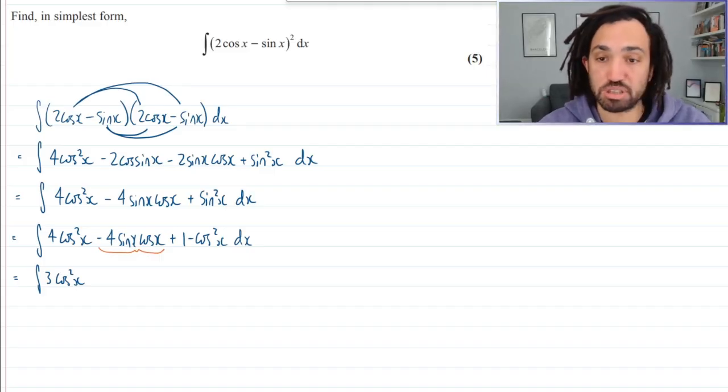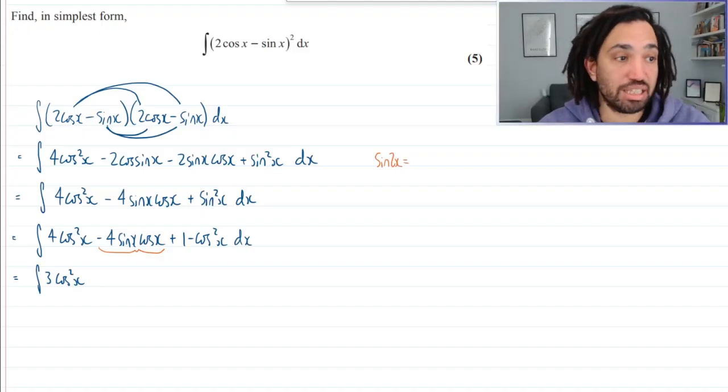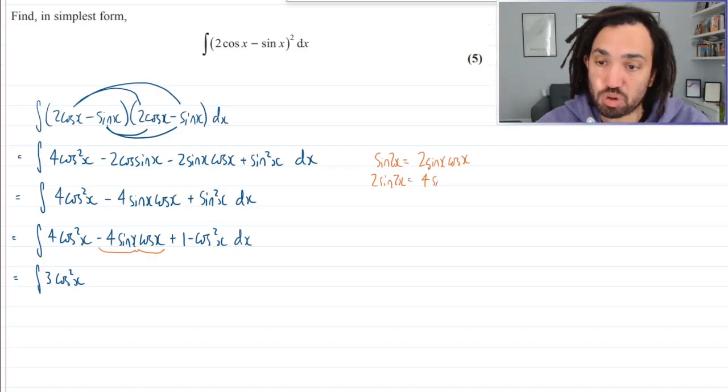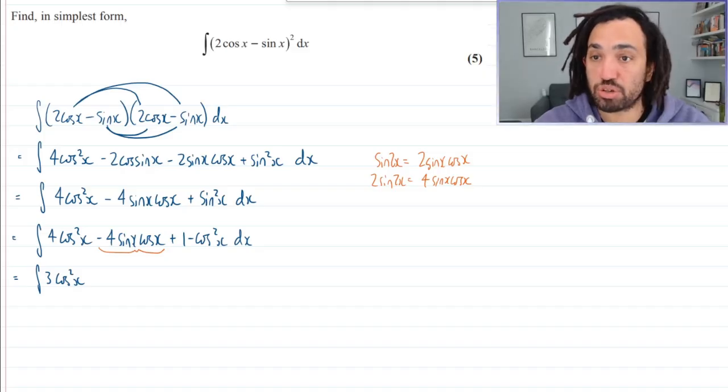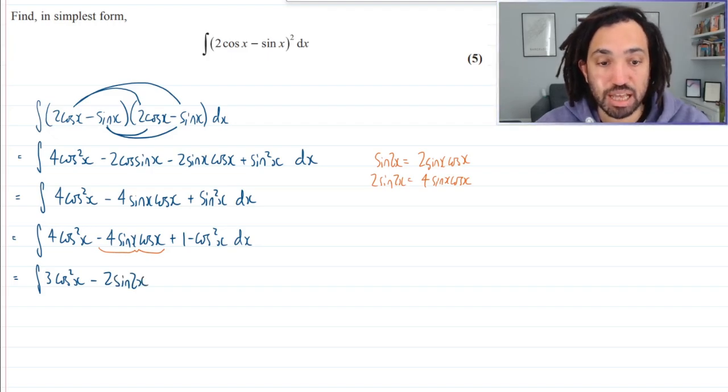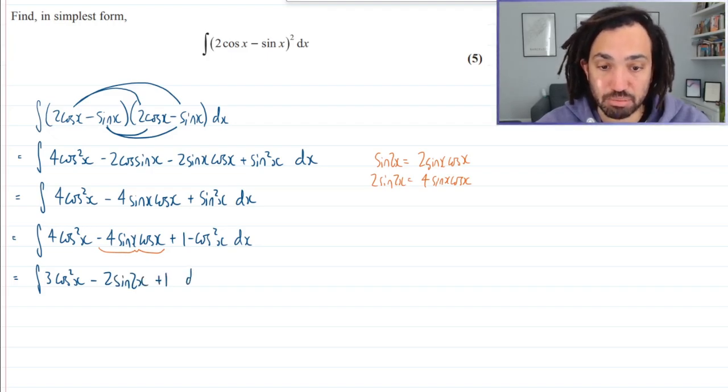Hopefully you've spotted it. If not, don't worry. But we do know that sin 2x is equal to 2 sin x cos x. So therefore if I times both sides by 2, I get 4 sin x cos x. And that can go straight in there. So that's minus 2 sin 2x. And then we've also got this plus 1 to come along for the ride.